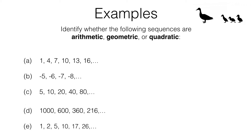In this video we're looking at identifying sequences. In particular we want to see whether they are arithmetic, geometric, or quadratic. Before we get stuck into it, it's important to note there are other types of sequences — these three are not the only ones that exist. However, for this lesson we're only going to be looking at arithmetic, geometric, and quadratic sequences.